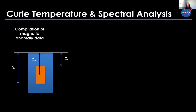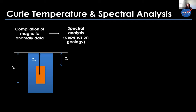To focus on Curie depth estimates using spectral analysis, the first thing we need is a compilation of magnetic anomaly data. For continent-wide compilations like Antarctica, this is a huge international effort that takes decades. Then we apply a spectral analysis that depends on the geology of the region, incorporating knowledge of crustal thickness. From there we do the Curie depth estimate, and then we do the thermal model.